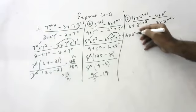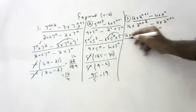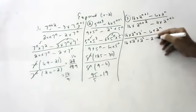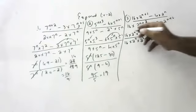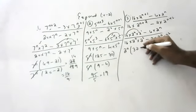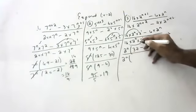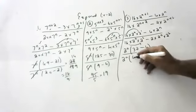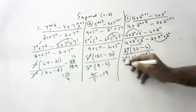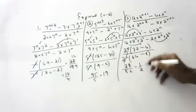A student attempts: 16 into 2 power n into 2 power 1, minus 4 into 2 power n, divided by 16 into 2 power n into 2 squared, minus 2 into 2 power n into 2 squared. What is common in the numerator? 2 power n: giving 32 minus 4. Denominator: 2 power n common, giving 16 into 4 equals 64 minus 8. So 28 by 56 equals 1 by 2.